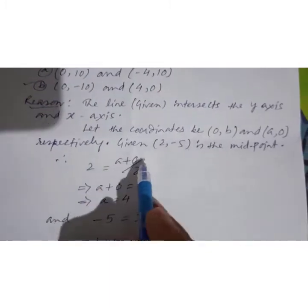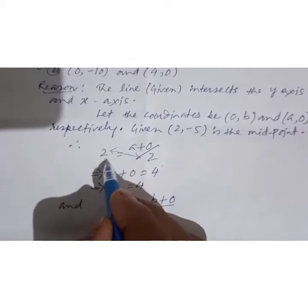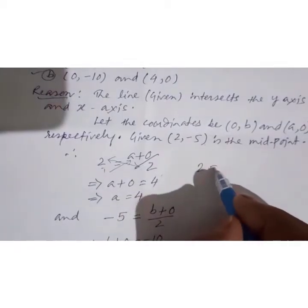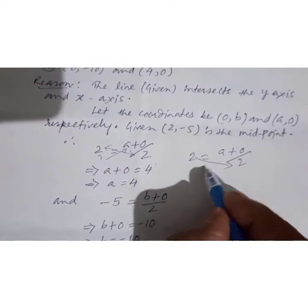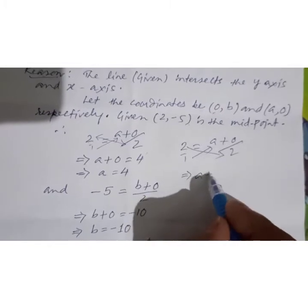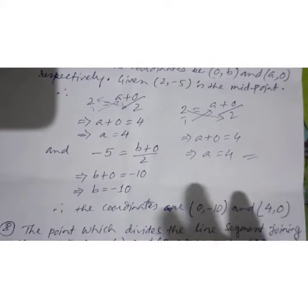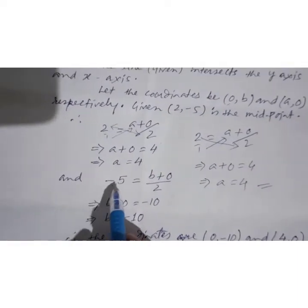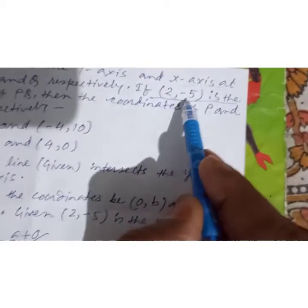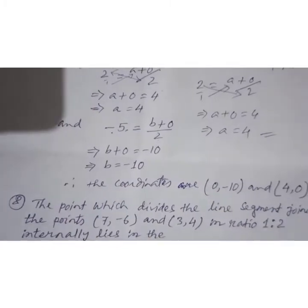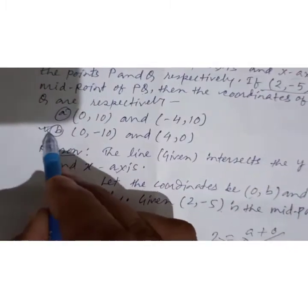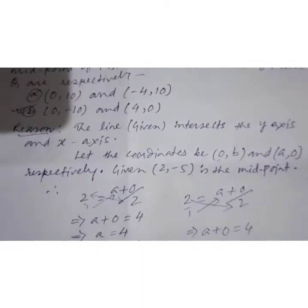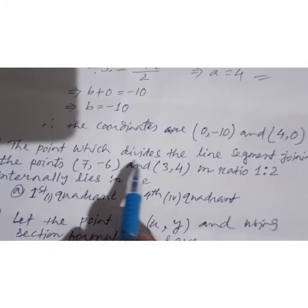Using the midpoint formula: 2 = (a+0)/2, so cross-multiplying gives a+0 = 4, meaning a = 4. Similarly, -5 = (b+0)/2 gives b = -10. So the coordinates are P = (0, -10) and Q = (4, 0). This is the correct option. Though it looks difficult, it is straightforward using the midpoint formula.